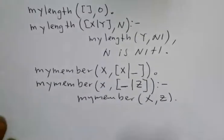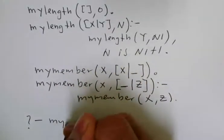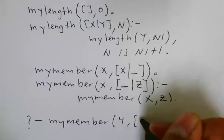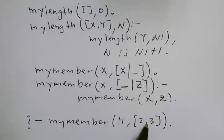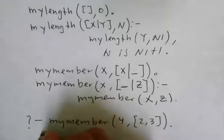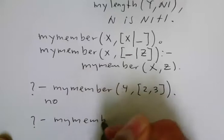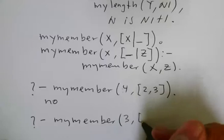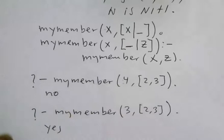So, in that case, what we have done is something like this in the query system. If I say something like, my member for 4, it's asking is 4 a member of this list. So, in this case, the answer will be no. And then my member, let's use the same example, is 3 inside this list. And the answer should be yes, once we test it.